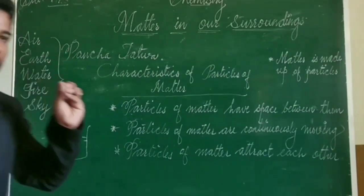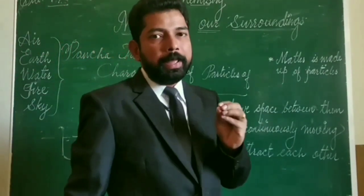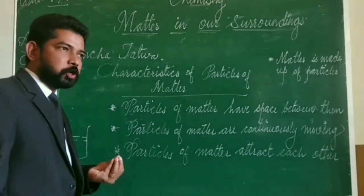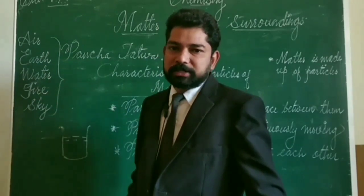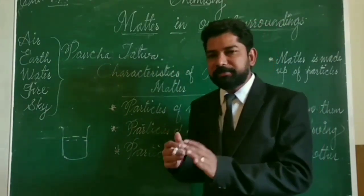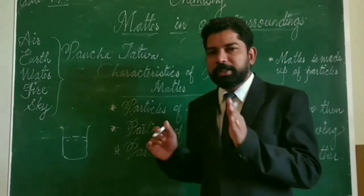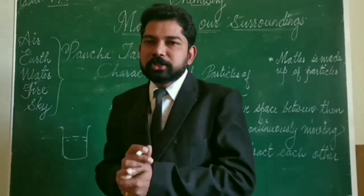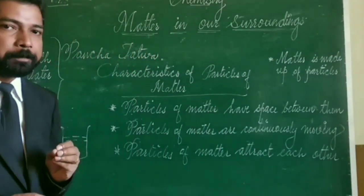According to Indian philosophers, all matter contains five elements, applicable for both living and non-living things. It is also observed that Greek philosophers have reached almost the same result. Now, modern scientists classify matter based on their physical and chemical properties. In this first lesson, we are going to learn the classification of matter based on physical properties.